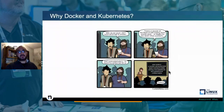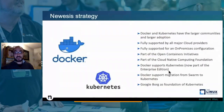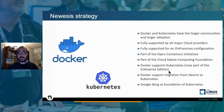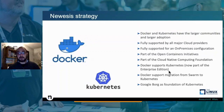So why are Docker and Kubernetes the ones we refer to in this session? As our company and many others concluded, we selected Docker and Kubernetes as our reference for container orchestration because they have the largest community, are fully supported by all major cloud providers, and support on-premise configurations. They are part of the Open Container Initiative and the Cloud Native Computing Foundation. Docker supports Kubernetes in its Enterprise Edition, and Docker received support in migrating from its own orchestrator, Swarm, to Kubernetes. Google Borg is the foundation of Kubernetes, giving it a longer history than the Kubernetes name itself.